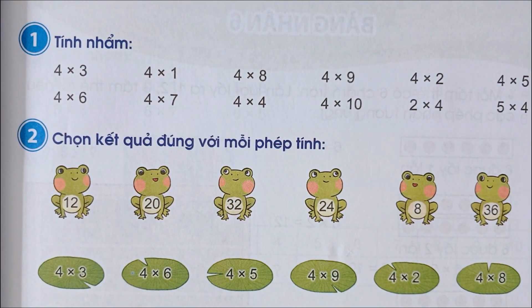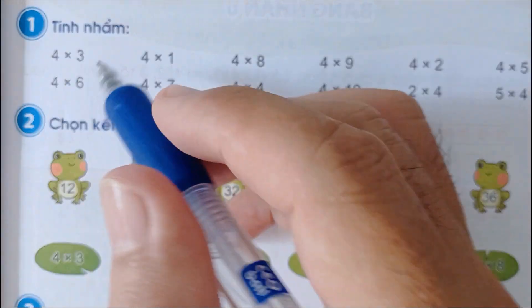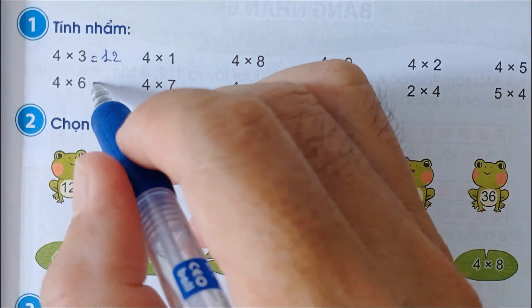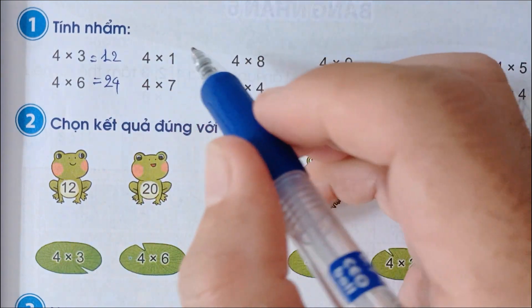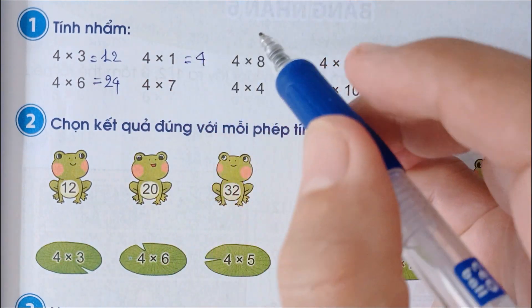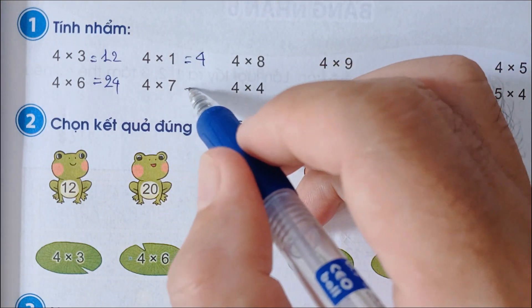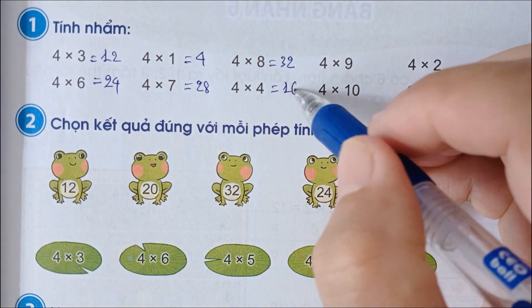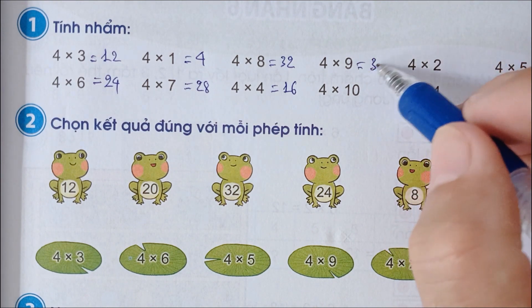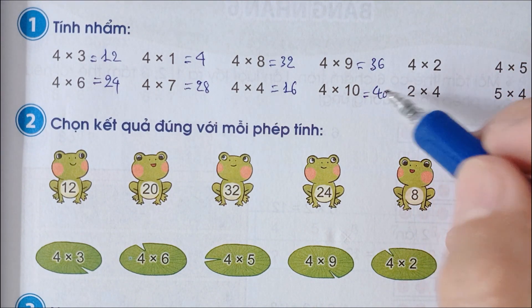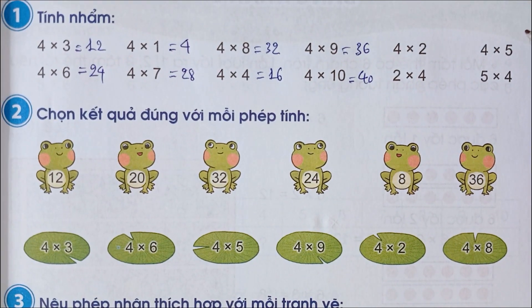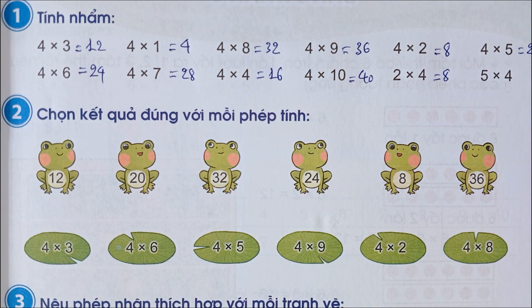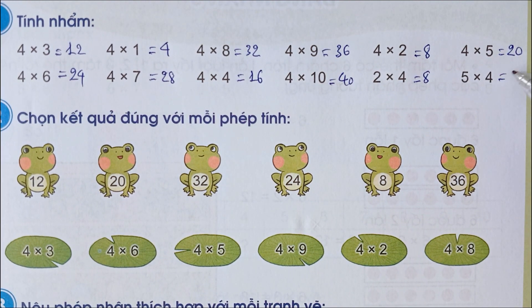Qua bài số 1 tính nhẩm: 4 x 3 bằng 12, 4 x 6 bằng 24, 4 x 1 bằng 4 (bất cứ số nào x 1 cũng bằng số đó), 4 x 7 bằng 28, 4 x 8 bằng 32, 4 x 4 bằng 16, 4 x 9 bằng 36, 4 x 10 bằng 40, 4 x 2 bằng 8, 2 x 4 cũng bằng 8, 4 x 5 bằng 20, 5 x 4 cũng 20 luôn.